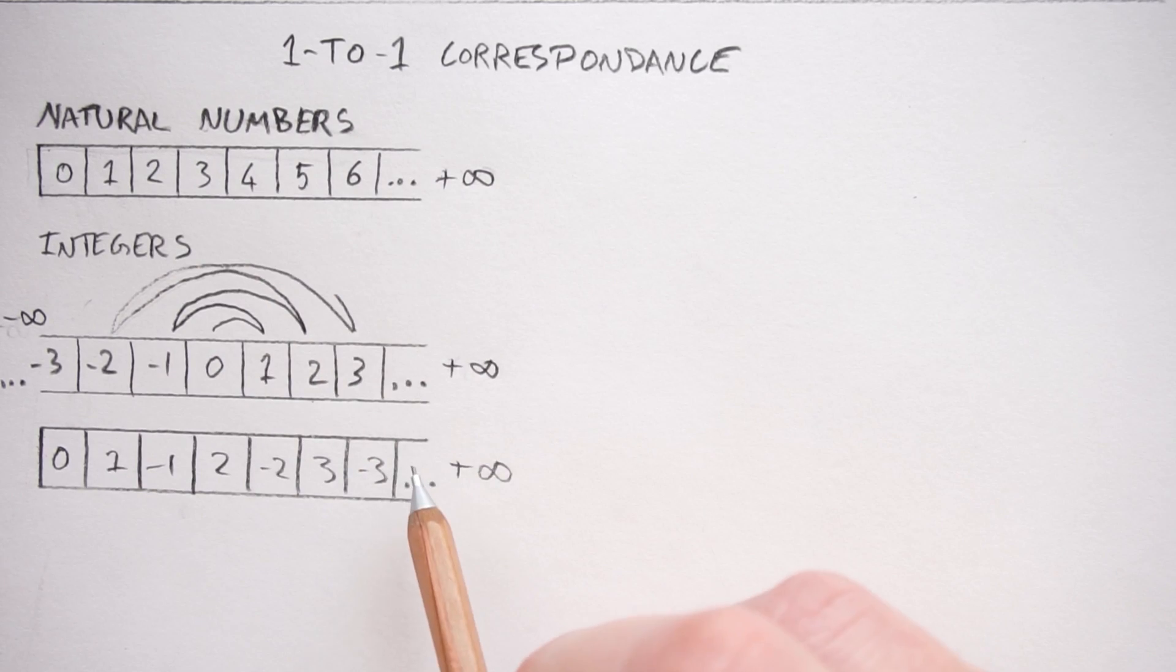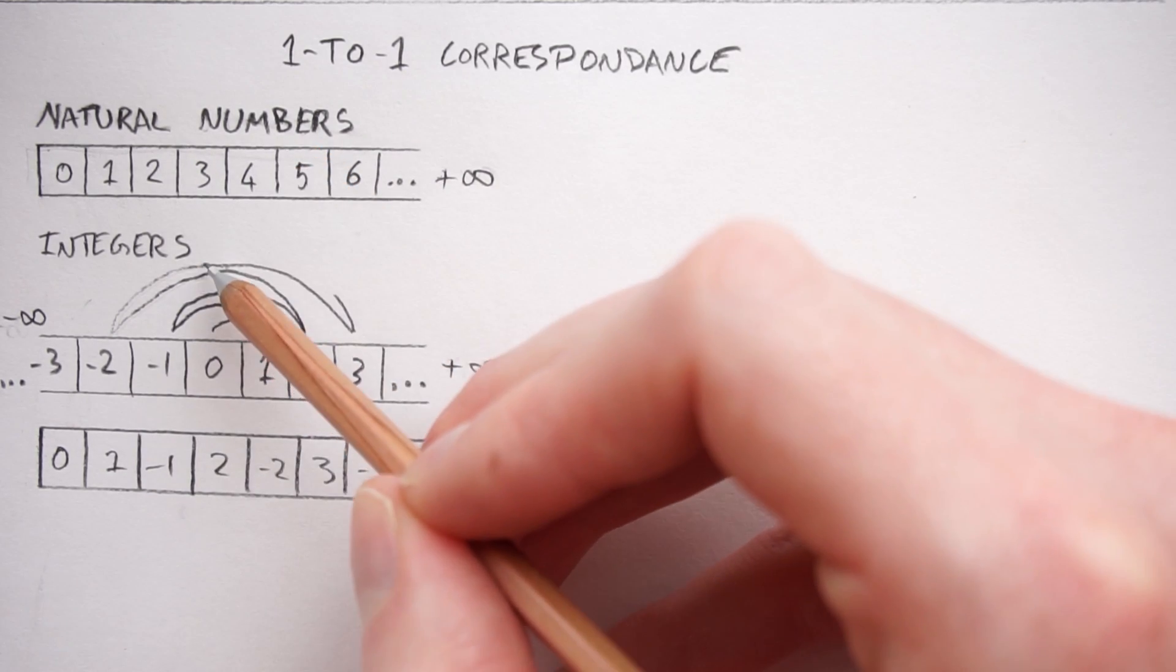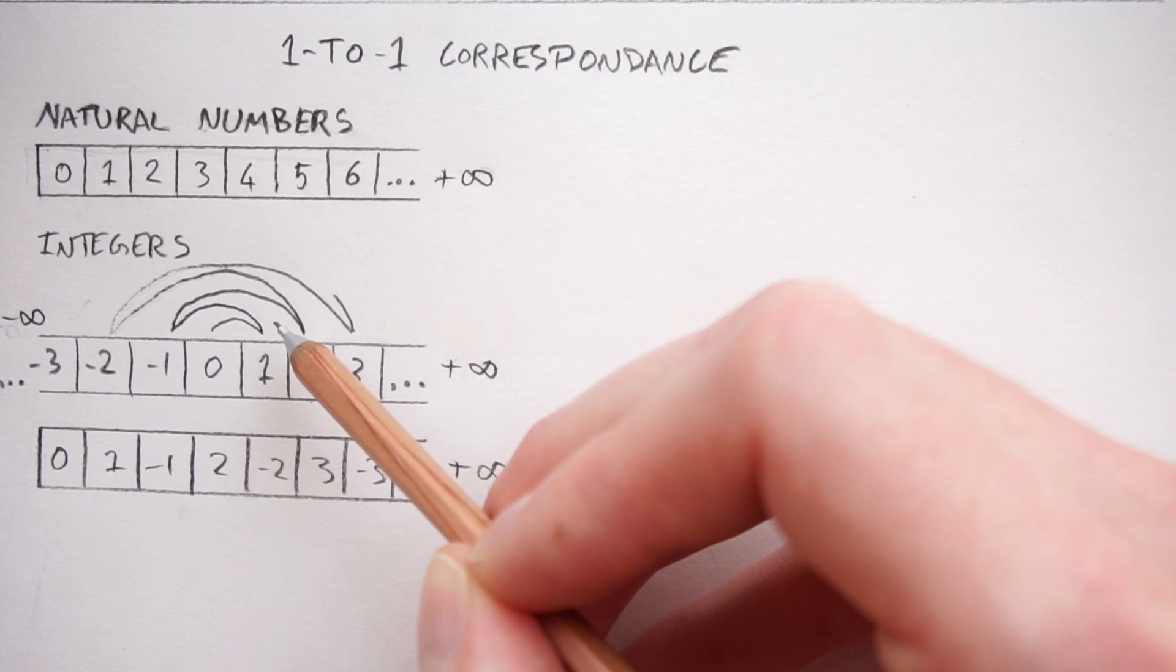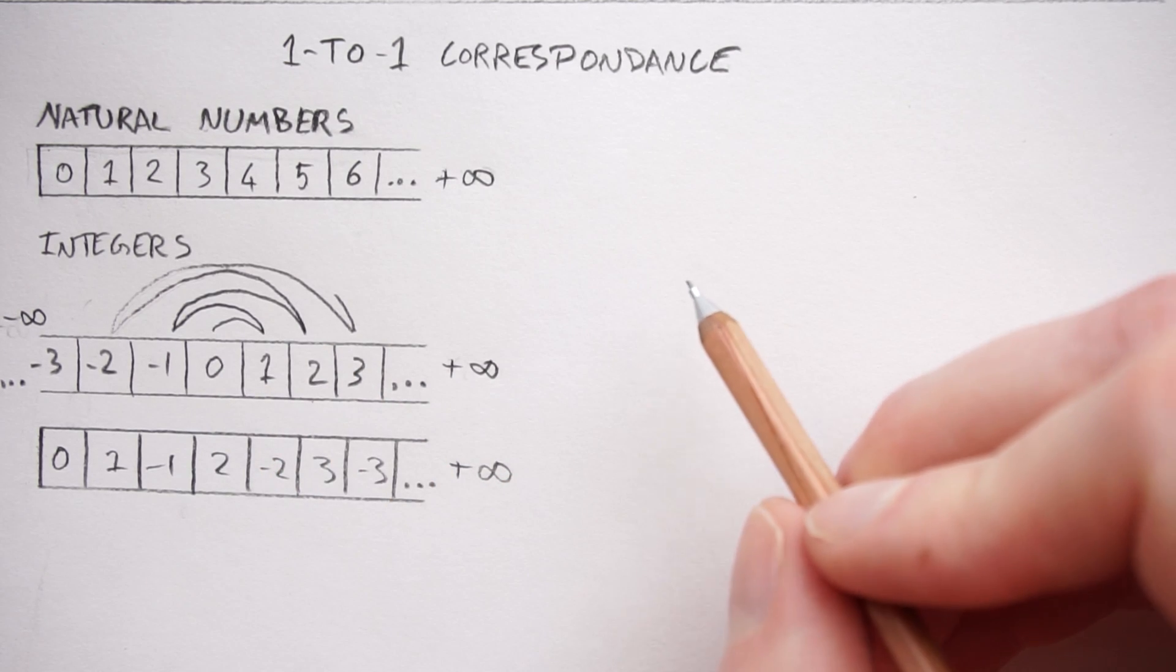And George Cantor, through this argument, said that the natural numbers and the integers are the same exact size. Now you can do the exact same thing for the fractions.